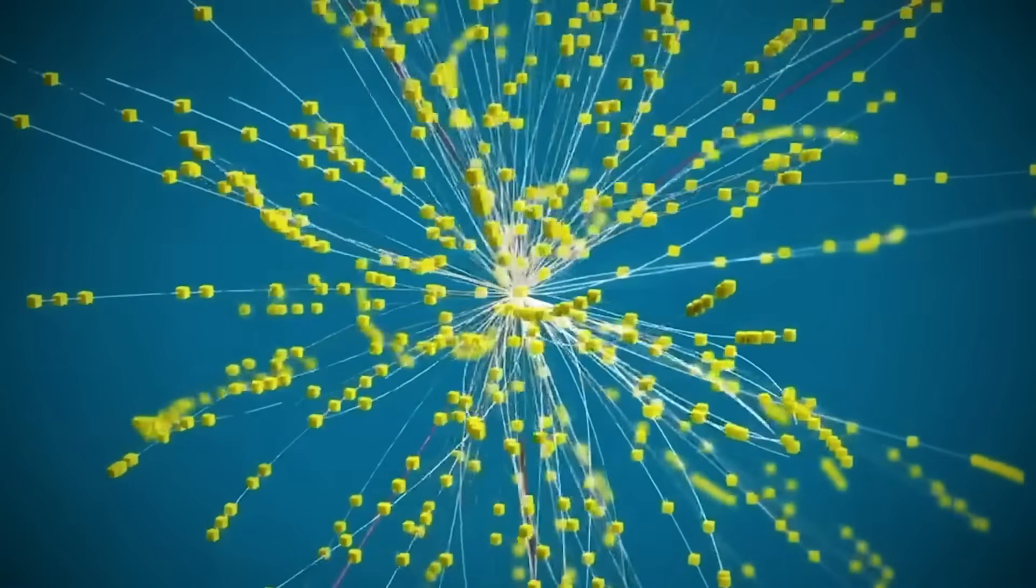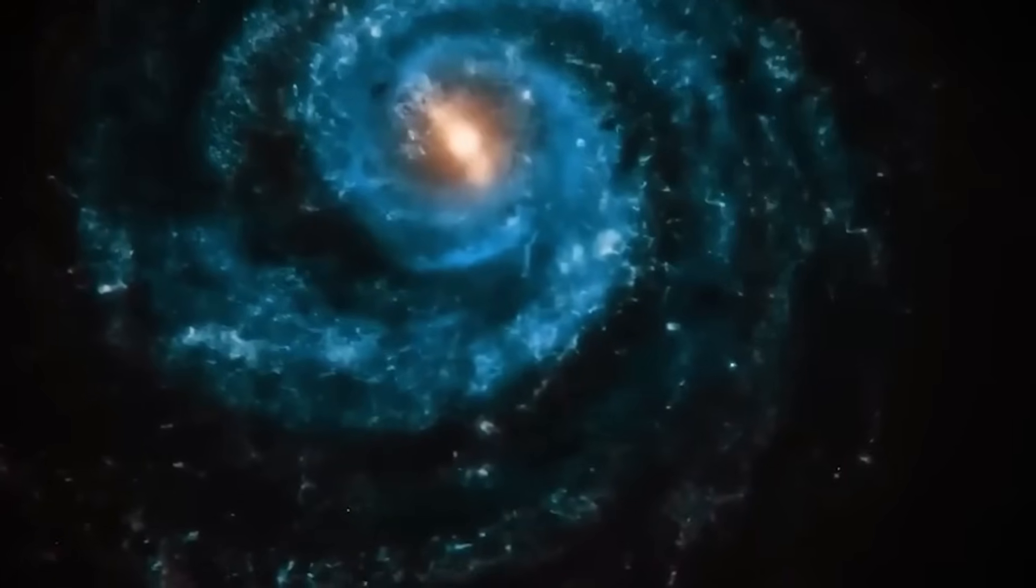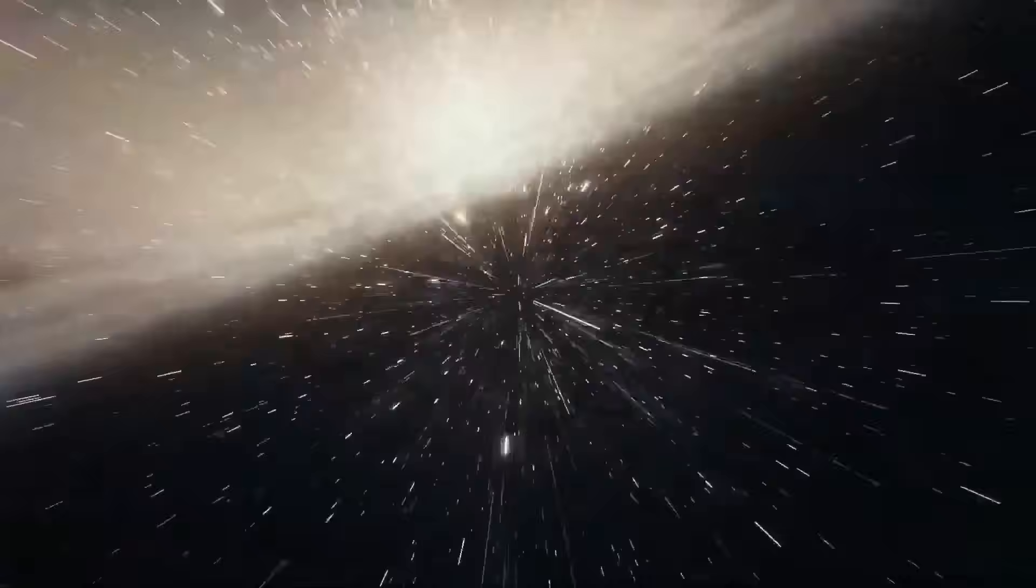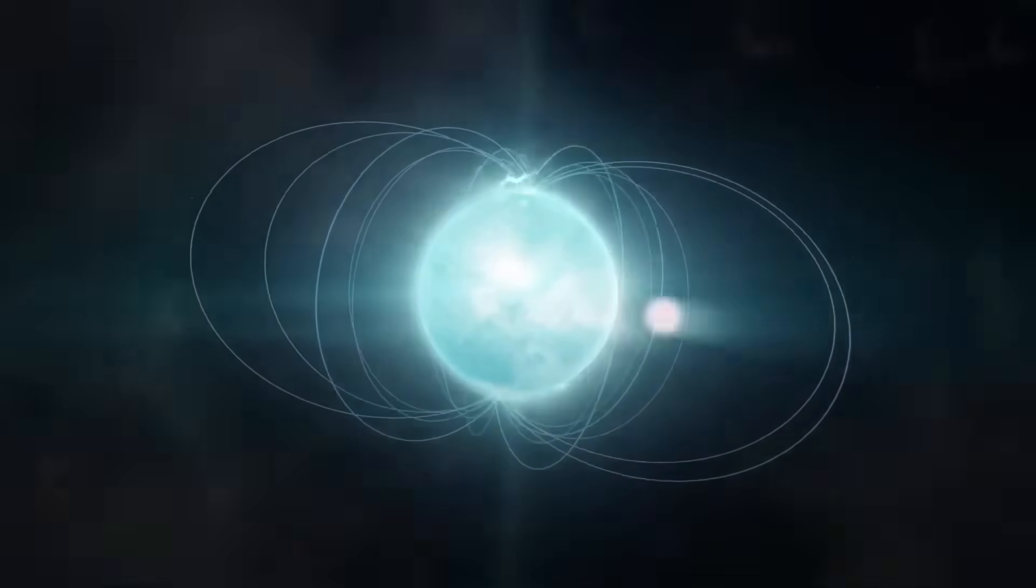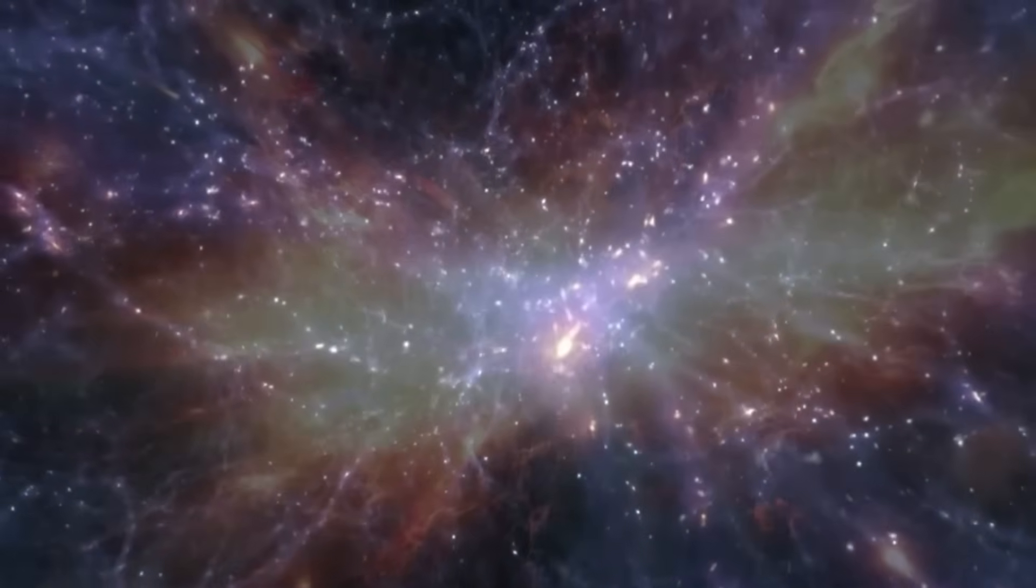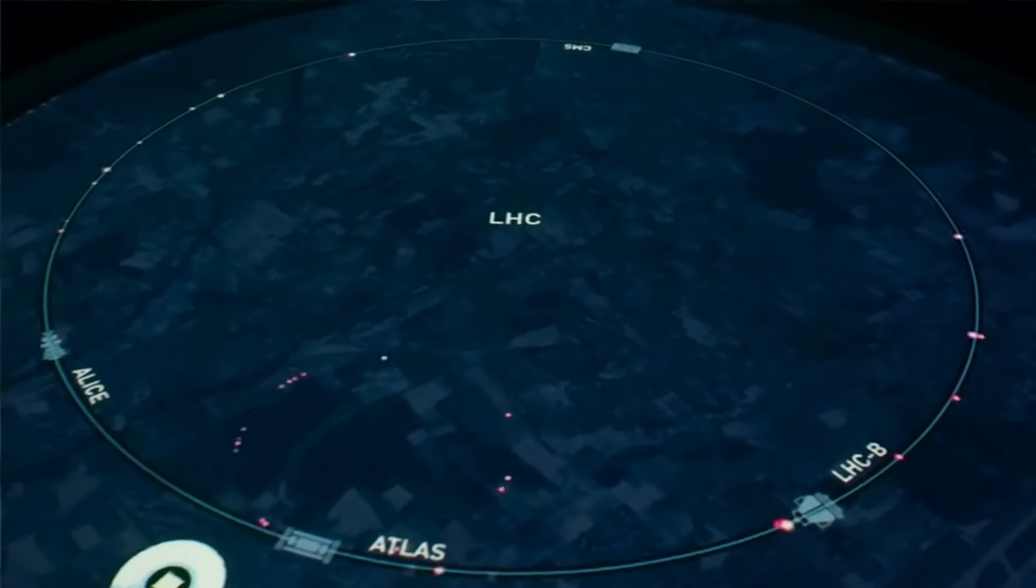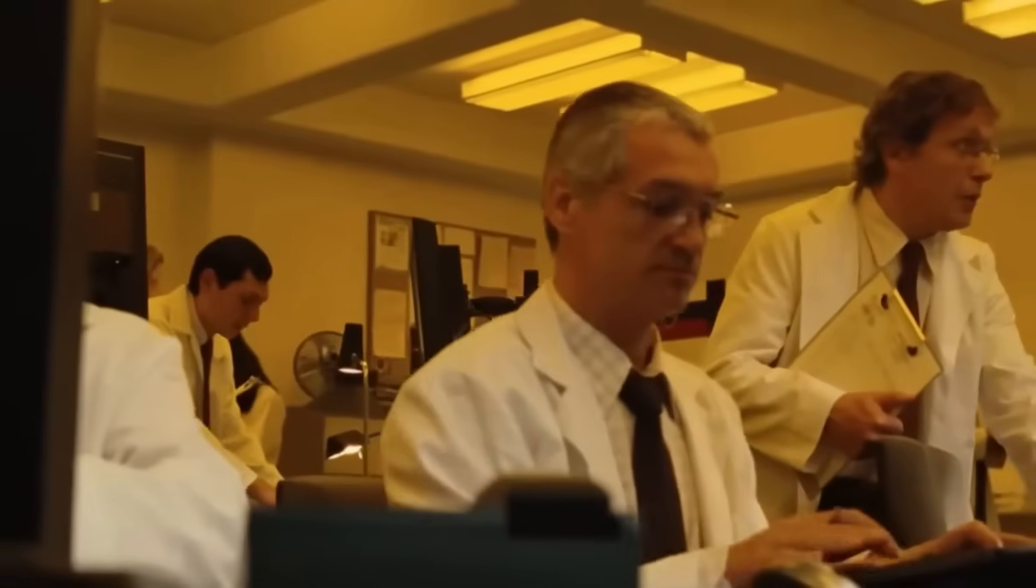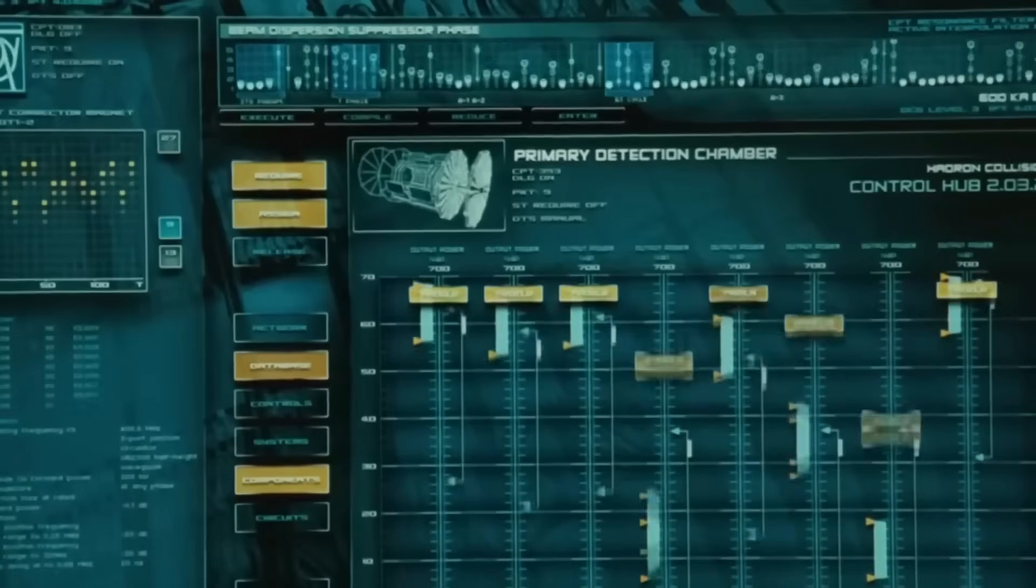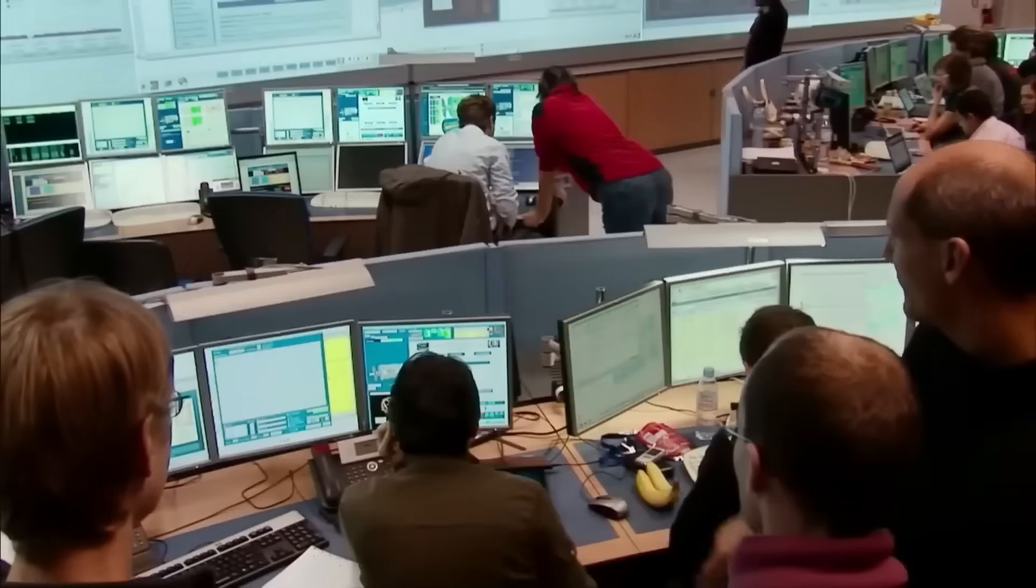To grasp the profound implications of this experiment, it's helpful to consider a vivid analogy. Imagine the vast expanse of the night sky, teeming with countless stars held meticulously in their precise positions by an invisible, intricate scaffolding. This scaffolding represents the dark matter and dark energy that constitute the vast majority of the universe's mass and energy. Fermilab's experiment can be likened to a delicate yet powerful attempt to gently shake this cosmic scaffolding to observe if it produces even the slightest rattle. If such a rattle is detected, it would signify a connection between our familiar visible universe and the mysterious dark sector.